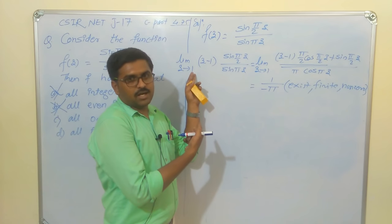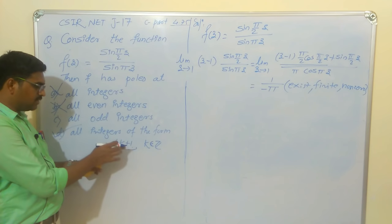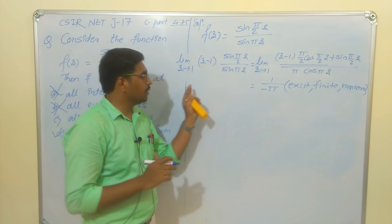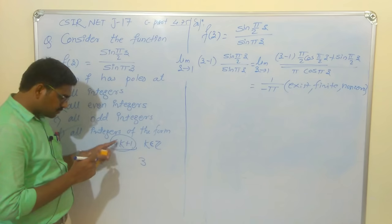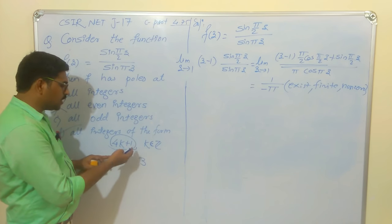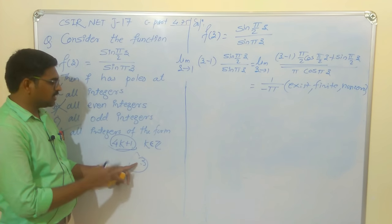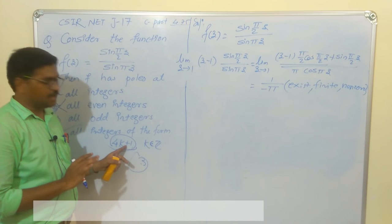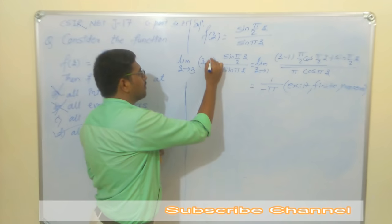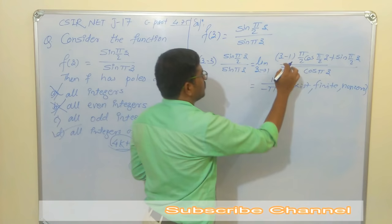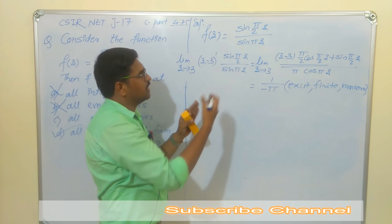So z=1 is a pole of order 1. Since 1 is of the form 4k+1 (k=0), this supports Option D. But to distinguish between Options C and D, we need to check an odd integer not of this form. The number 3 is odd but not of the form 4k+1 — you can verify: k=0 gives 1, k=1 gives 5, k=−1 gives −3, so 3 never appears. Let us check z=3.